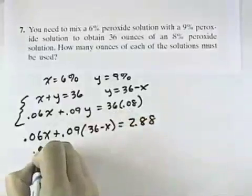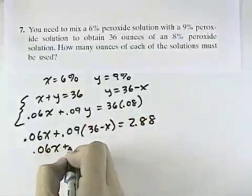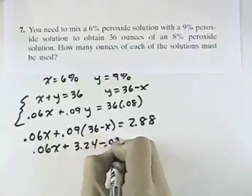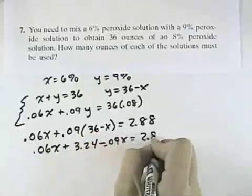Multiplying out the left side, 0.06x plus 0.09 times 36 will be 3.24, and then minus 0.09x equals the 2.88.